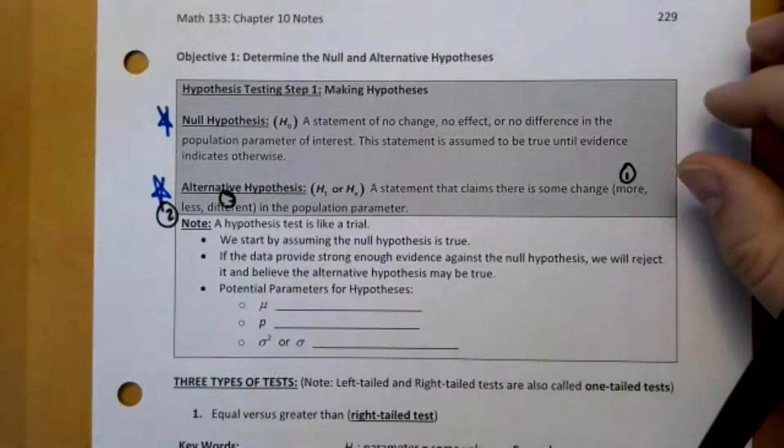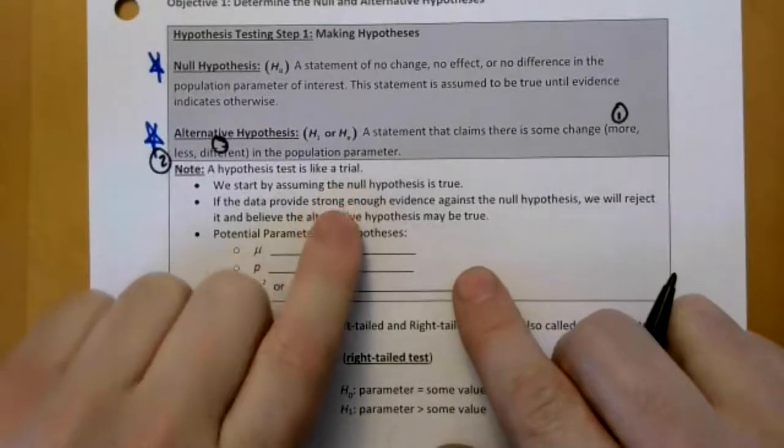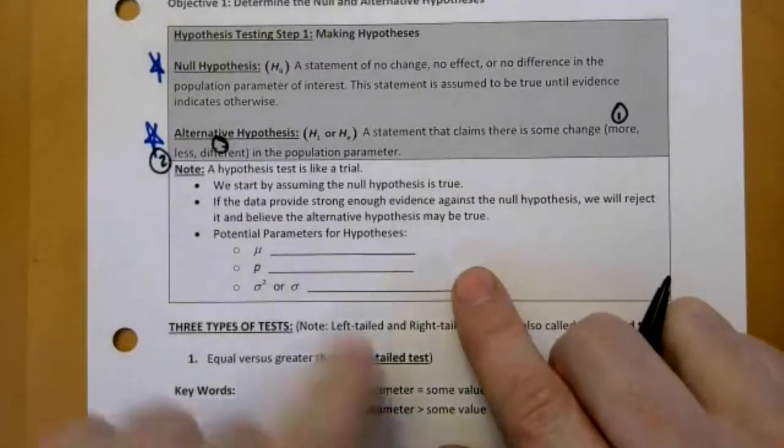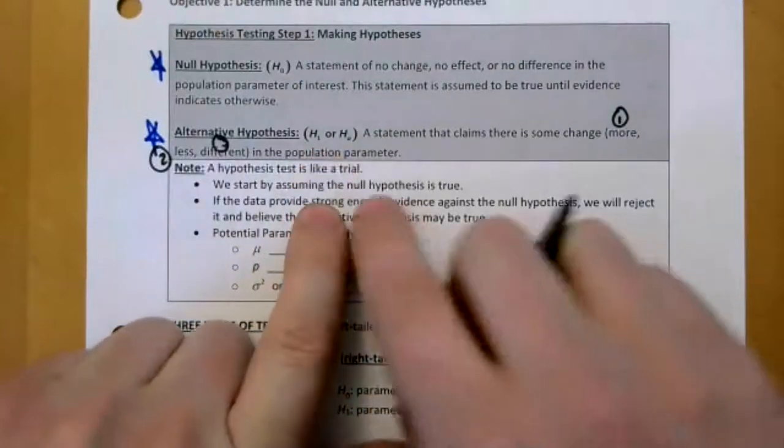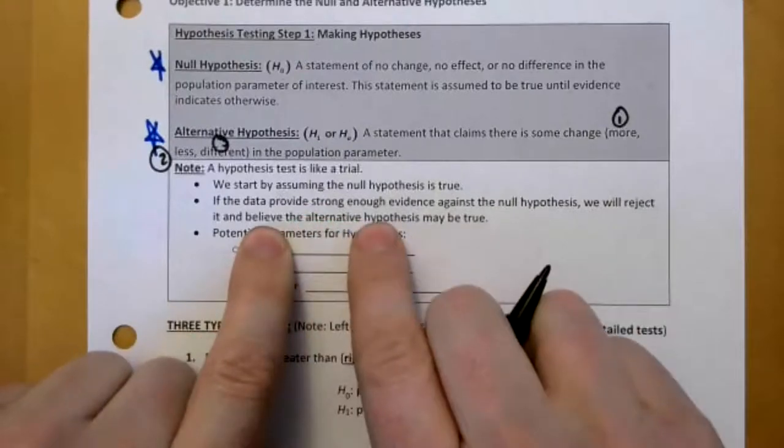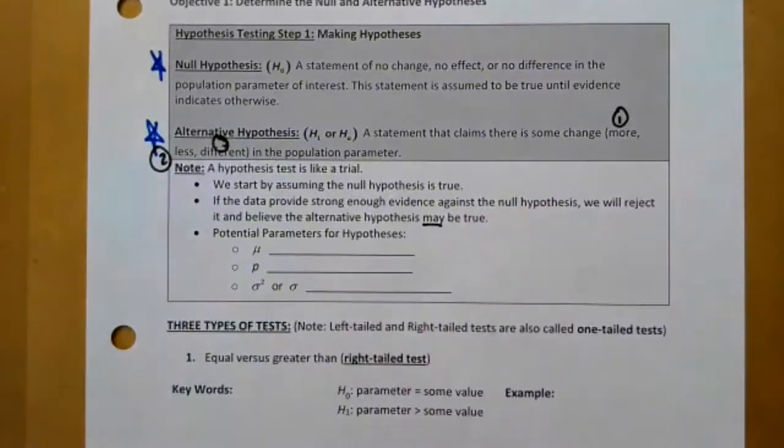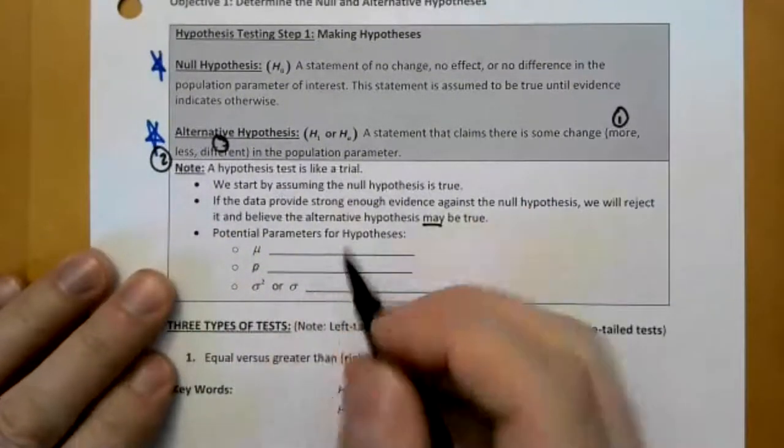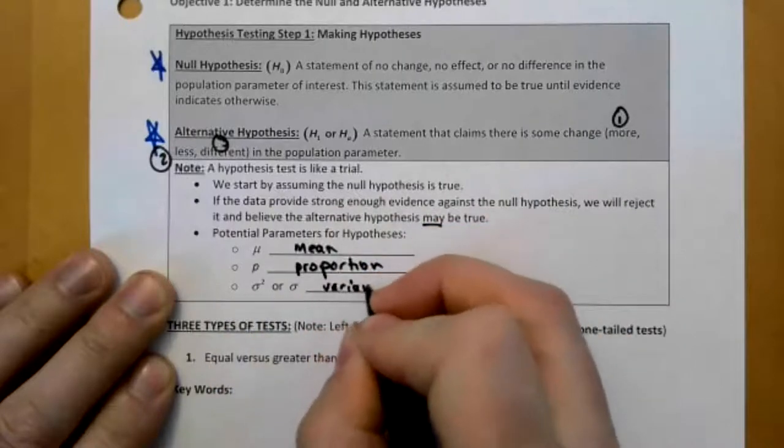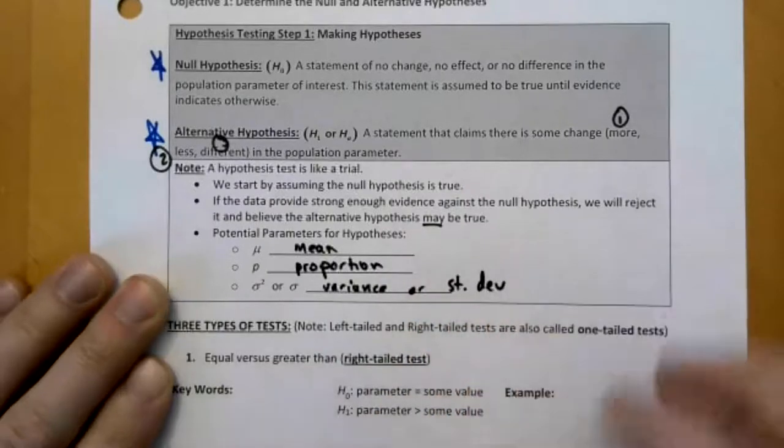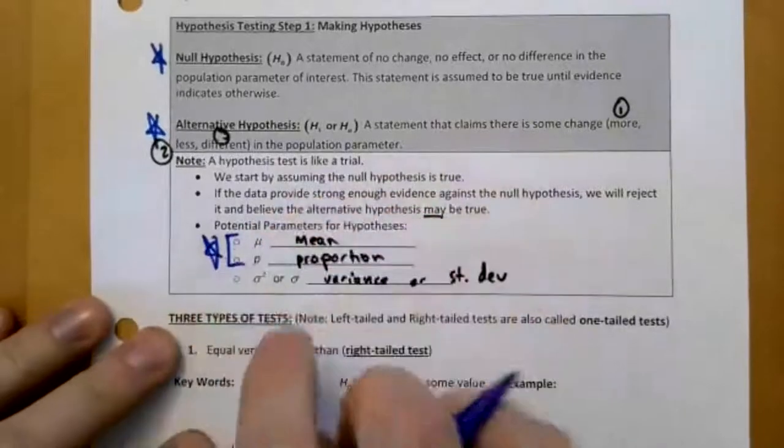It's a statement that claims there is some sort of change, and there's only three options. You could do more, you could do less, or you could do different. This hypothesis test is like a trial. In America, you're assumed innocent until proven guilty. We're saying the same thing here. We assume there is no change, nothing has happened, until we find evidence to support that there is change. So we assume the null hypothesis is true. And then if the data is strong enough against null hypothesis, we reject it and believe that the alternative hypothesis may be true.